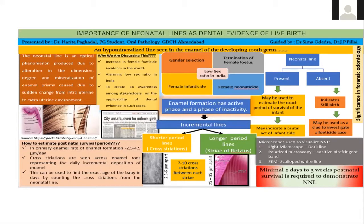To understand how we estimate postnatal survival period, we need to know what incremental lines of enamel are. Enamel formation has an active phase and a phase of inactivity, forming incremental lines. Short-period lines are cross striations and longer-period lines are Striae of Retzius, with a difference of 7 to 10 cross striations between each striae.